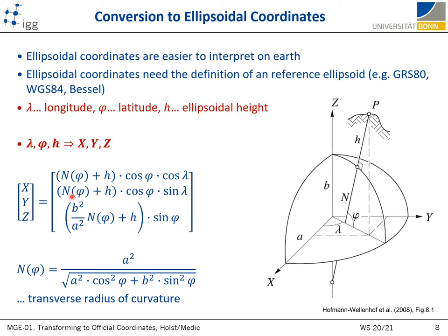Ellipsoidal coordinates require the definition of a reference ellipsoid, which is just a simple approximation of the Earth's shape. There are several reference ellipsoids currently being used, for example GRS-80, WGS-84, and historically in Europe, Bessel was one of the used ellipsoids. A conversion of ellipsoidal coordinates to Cartesian counterparts is given by these equations, where N represents the transverse radius of ellipsoid curvature, which is a function of ellipsoid parameters and the latitude phi.